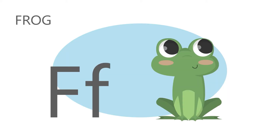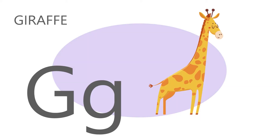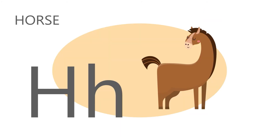F is for frog. F, f, frog. G is for giraffe. J, j, giraffe. H is for horse. H, h, horse.